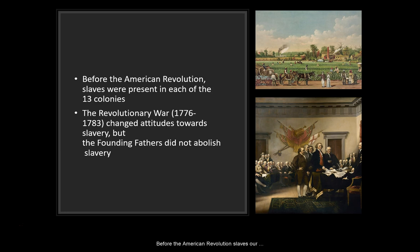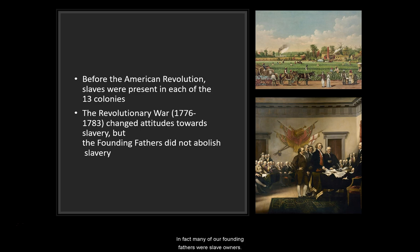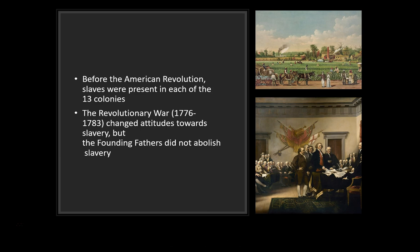Before the American Revolution, slaves were present in every single one of the 13 colonies. When the war broke out in 1776, not a lot changed right away. The attitudes towards slavery did change some, but when the Founding Fathers began to set up this new governmental experiment called the United States, they didn't abolish slavery. In fact, many of our Founding Fathers were slave owners — two of the most prominent, George Washington and Thomas Jefferson, were also two of the largest slave owners in Virginia. So they chose not to abolish slavery when creating this new nation, and it's not until 1804 that slavery was outlawed in the North.